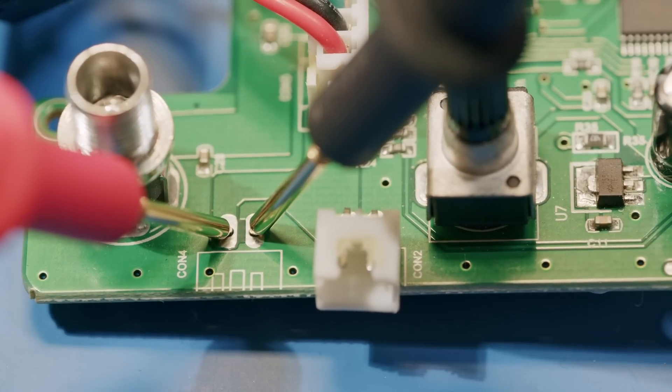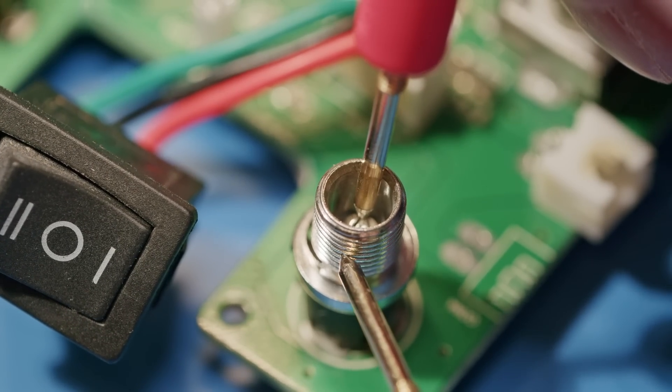The first step in minimizing the risk of damage during power-up is to measure the resistance from the power rails to the ground with a multimeter. You must measure your input power connector and any regulated rails on your board. Measuring between power and ground will give you a clear picture of the resistance, indicating potential power rail faults.